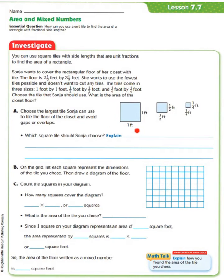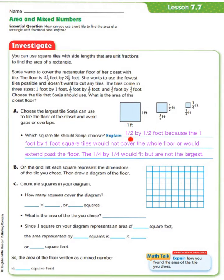Well, let's take a look. Should she use the 1 foot by 1 foot, the 1 1/2 foot by 1 1/2 foot, or the 1/4 by 1/4? Well, Sonia should choose the 1/2 by 1/2 foot tile square because the 1 foot by 1 foot square tiles would not cover the whole floor or would extend past the floor. The 1/4 by 1/4 tiles would fit, but they are not the largest. So, on the grid, let each square represent the dimensions of the tile you chose. Then, draw a diagram of the floor.